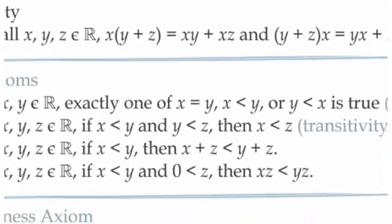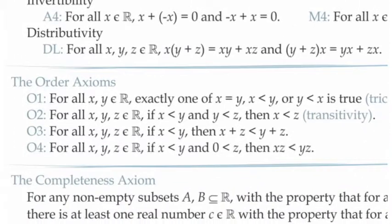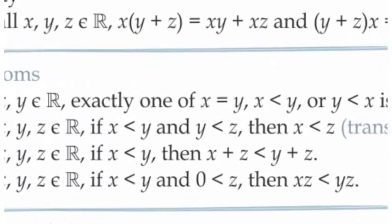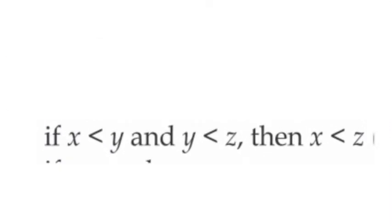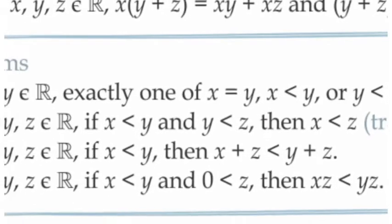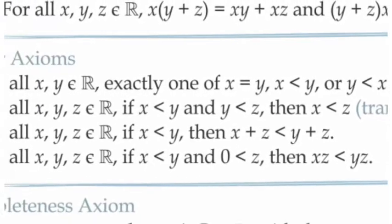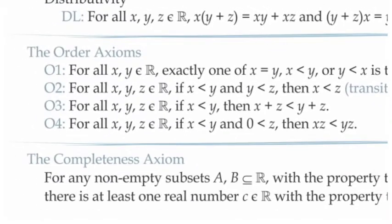The second order axiom, transitivity, tells us that if we have three numbers — let's say x, y, and z — if x is less than y and y is in turn less than z, then the smallest number x must be smaller than the largest number z. The last two order axioms tell us how the order relation interacts with our two binary operations, addition and multiplication.